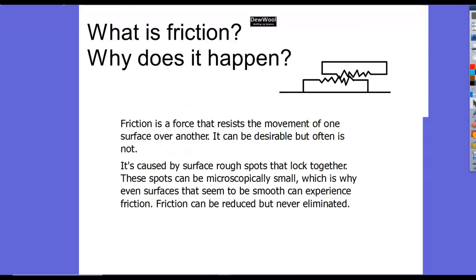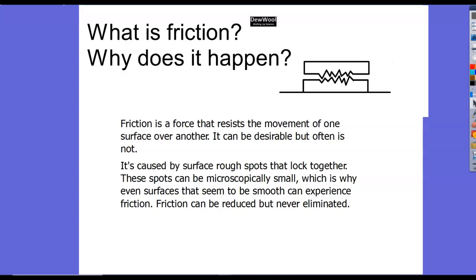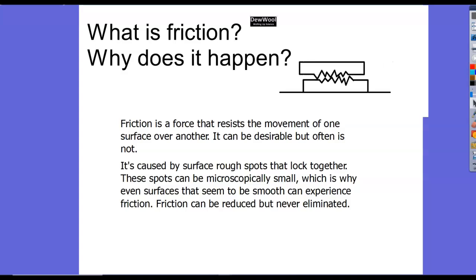Friction happens because of microscopic rough spots on the surfaces of objects we're trying to slide against each other. Even if you polish surfaces and make them smooth, you can't eliminate friction altogether because you can't completely smooth out these rough spots.